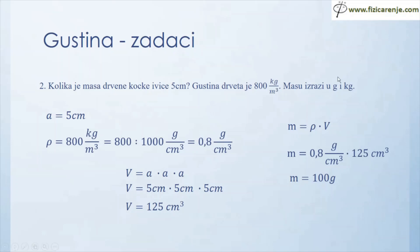Dobio sam da je masa drvene kocke 100 grama. U zadatku se tražilo da se masa izrazi u gramima i u kilogramima. 100 grama će biti jednako 100 podeljeno sa 1000 kilograma, što je 0,1 kilogram.